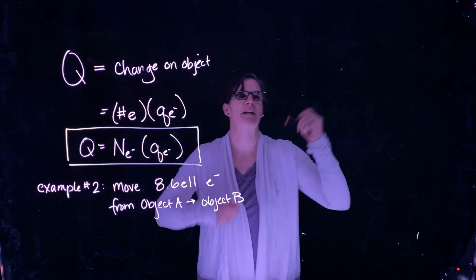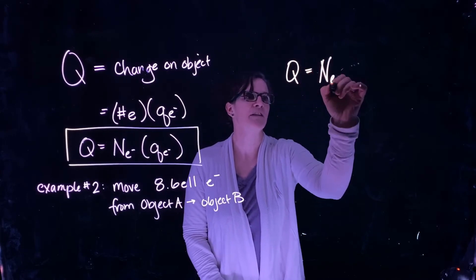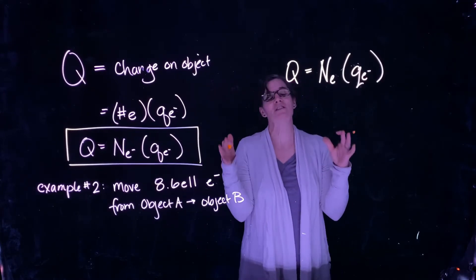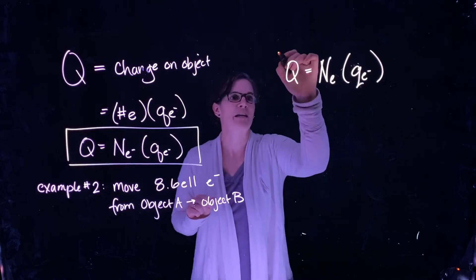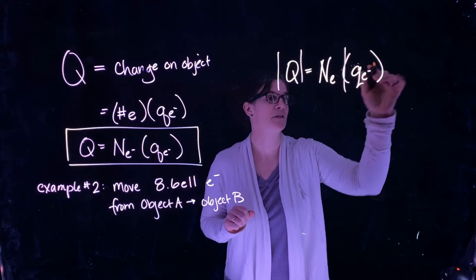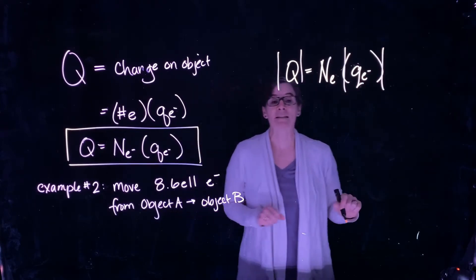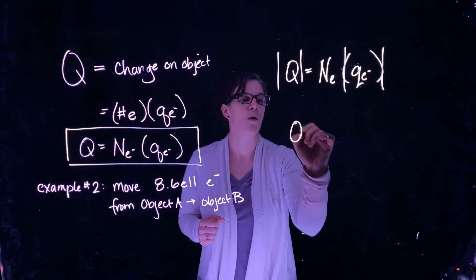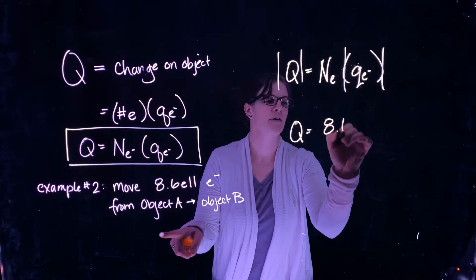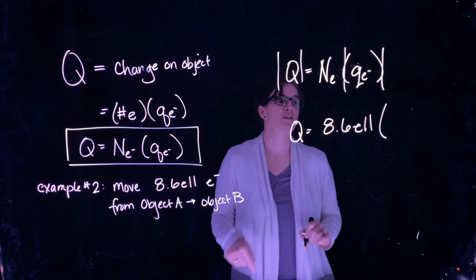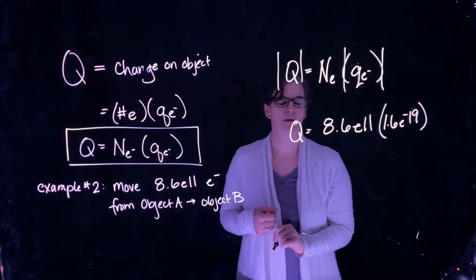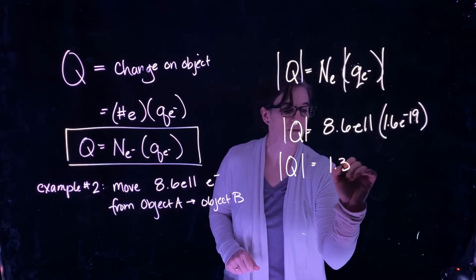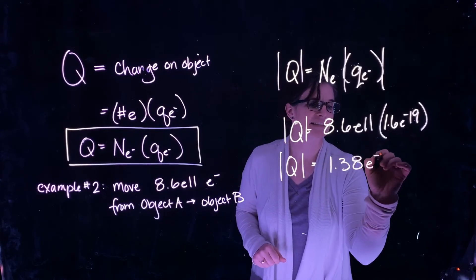We're going to use our relationship again: charge on an object equals the number of electrons either taken away or added, times the charge of an electron. Let's first look at just the magnitude of the charge. The number of electrons is always a positive scalar quantity, so we look at just the magnitude of the charge of an electron. The number of electrons moved is 8.6 times 10 to the 11th, and the charge on an electron is 1.6 times 10 to the minus 19th coulombs. So the magnitude of the total charge is 1.38 times 10 to the minus 7 coulombs.